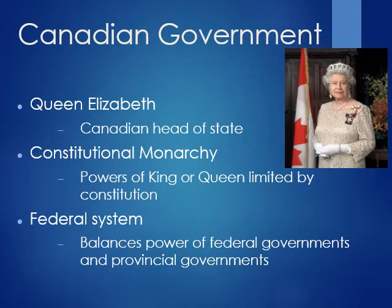In Canada, they also have a federal system. A unitary system is one big government, while a federal system has a balance of power between a federal government and smaller governments. In America we call them state governments, but in Canada they're called provinces, so they have provincial governments rather than state governments.